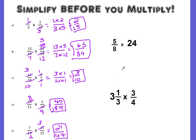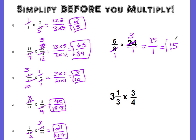Now let's look at these other two examples. We have a fraction times a whole number. Remember, to multiply a whole number times a fraction, you have to turn that whole number into a fraction by putting it over 1. So we have 5 eighths times 24 over 1. I can cross-simplify by dividing by 8: 8 divided by 8 is 1, and 24 divided by 8 is 3. Multiplying numerators: 5 times 3 is 15. Denominators: 1 times 1 is just 1. So my answer is 15.